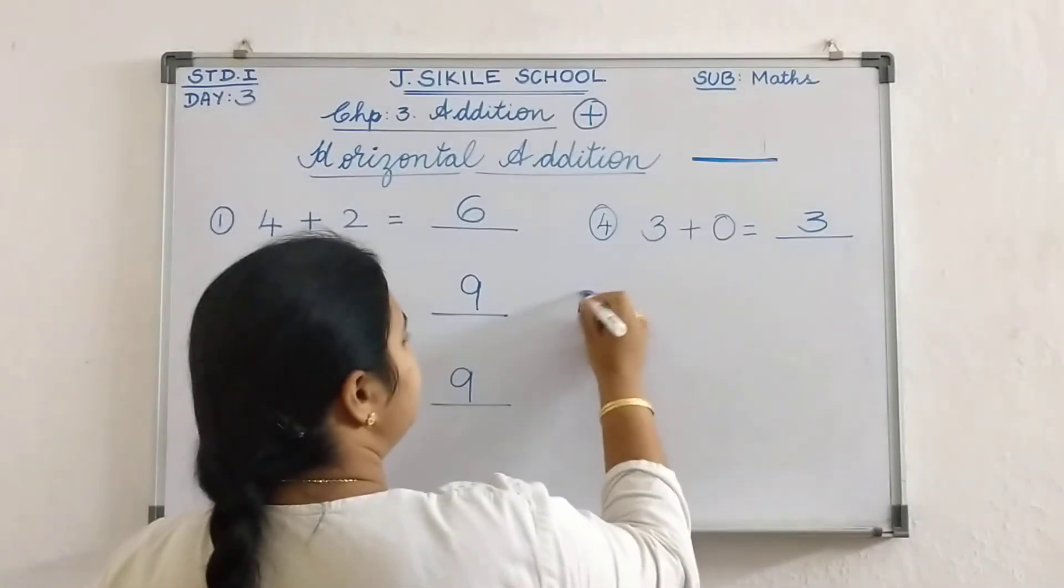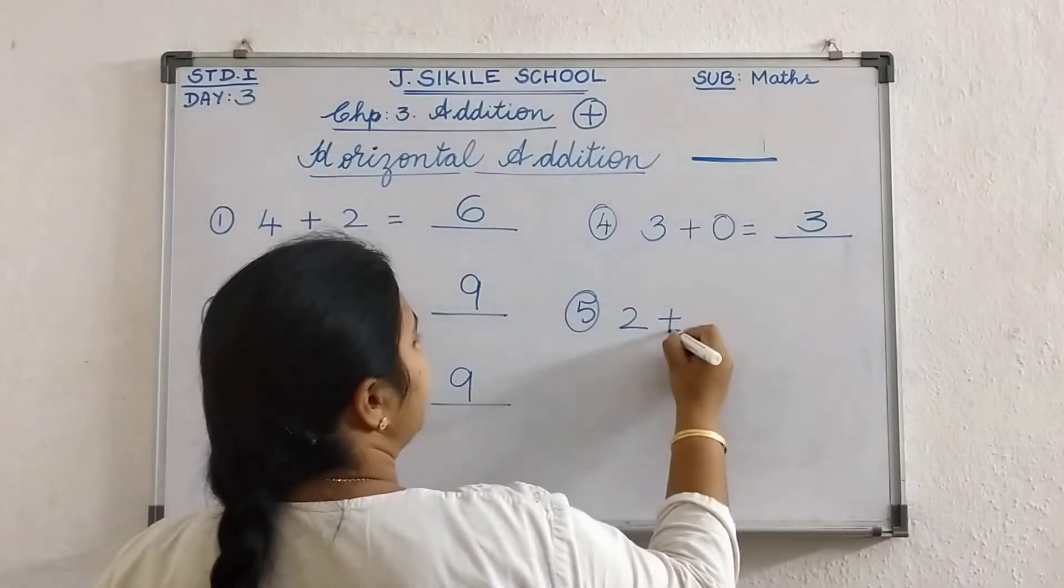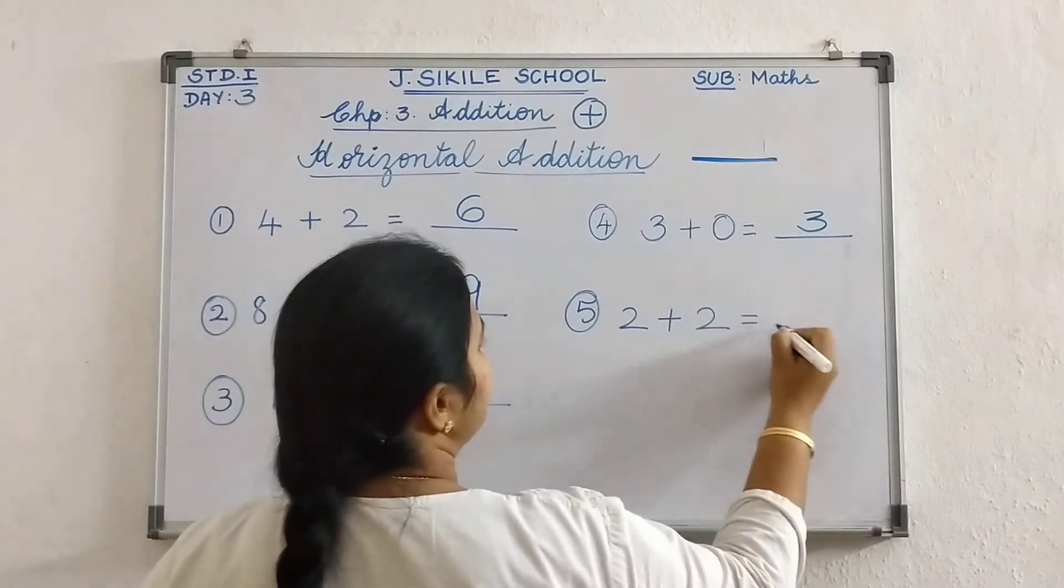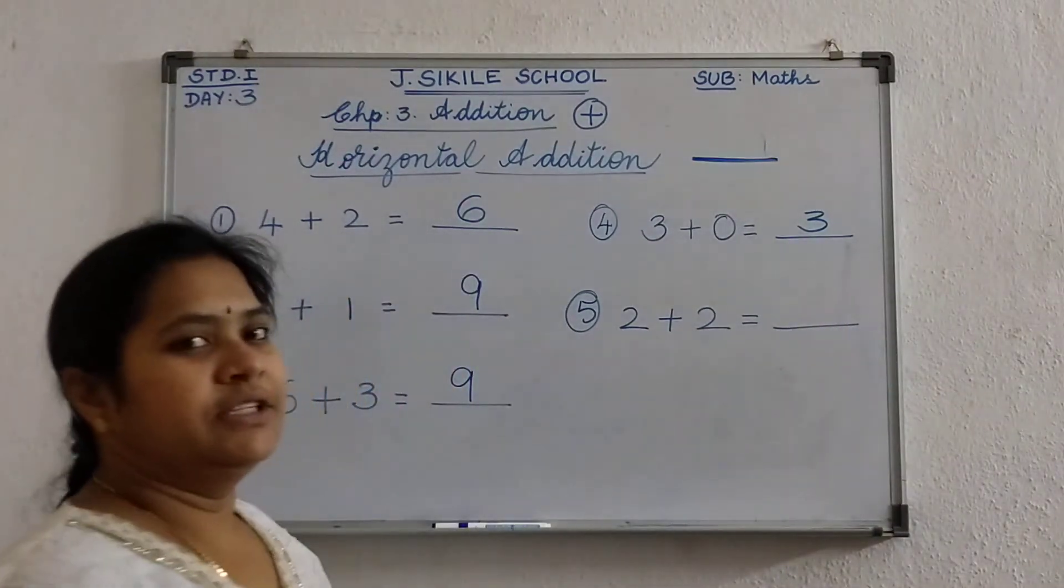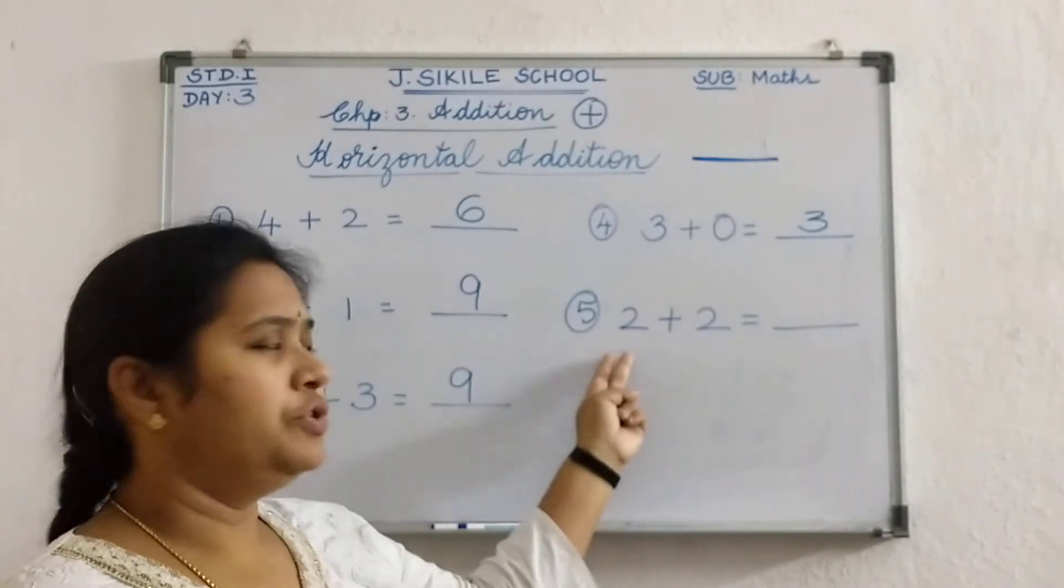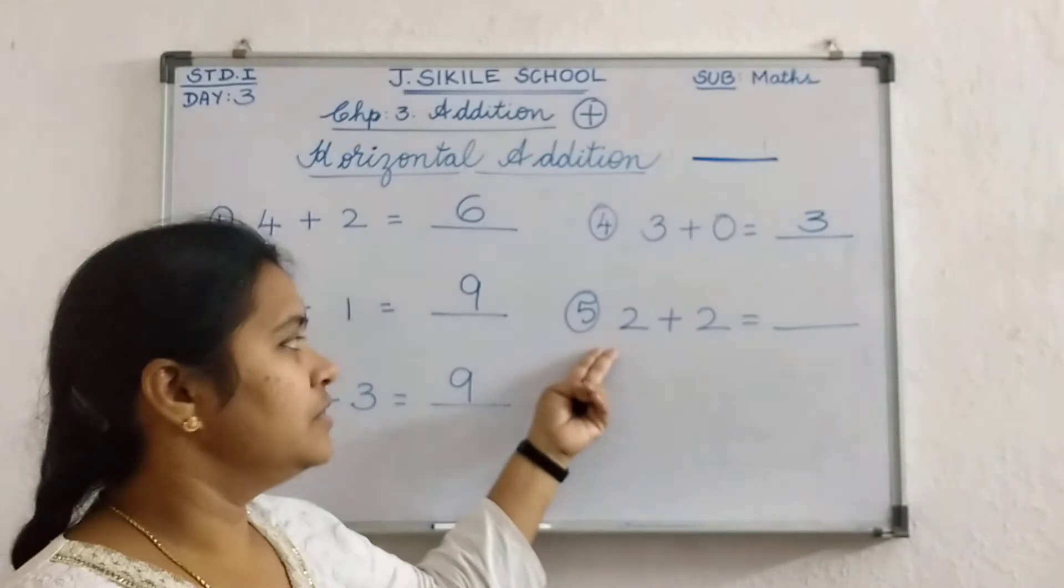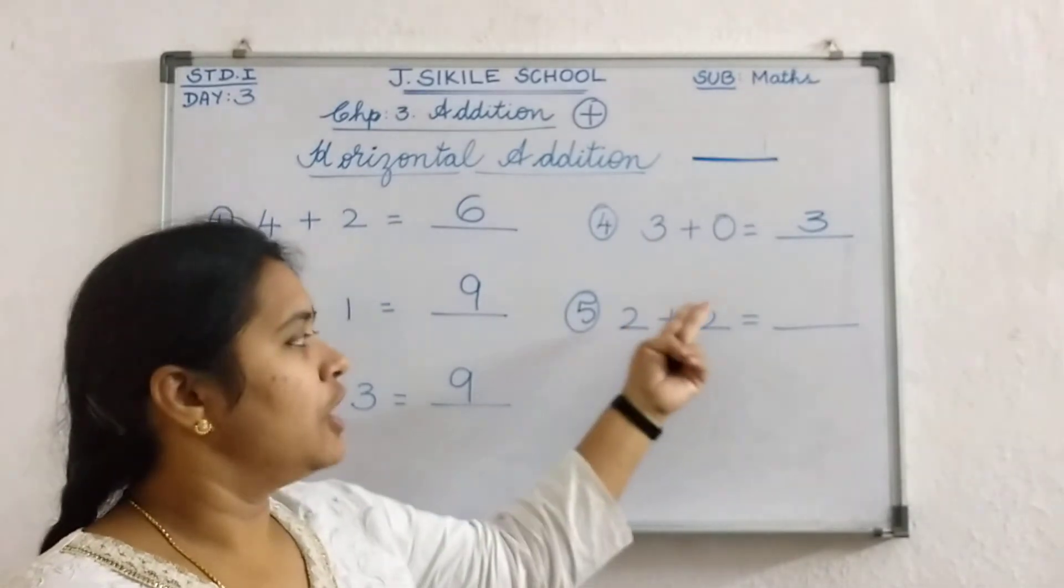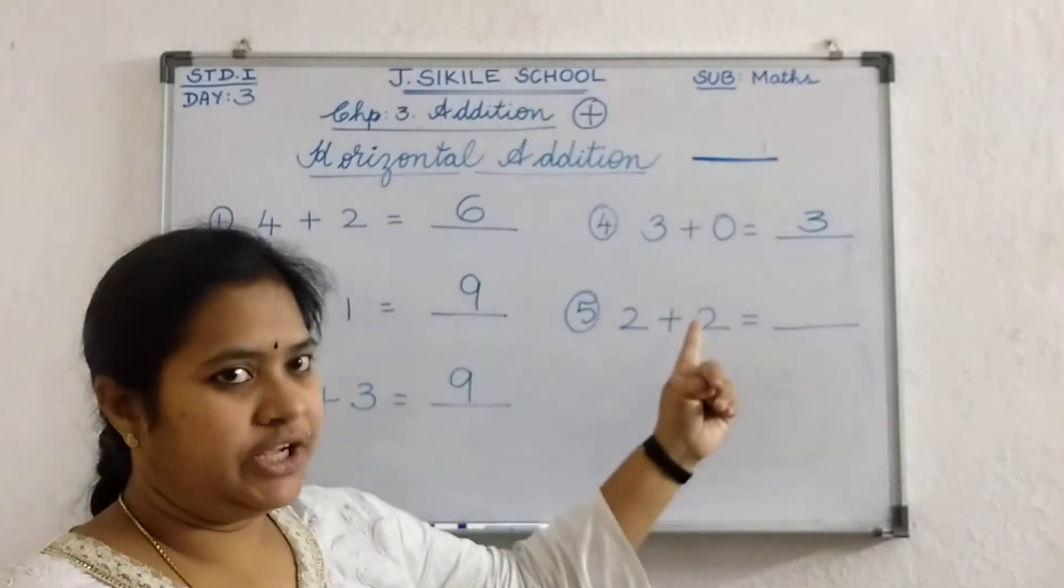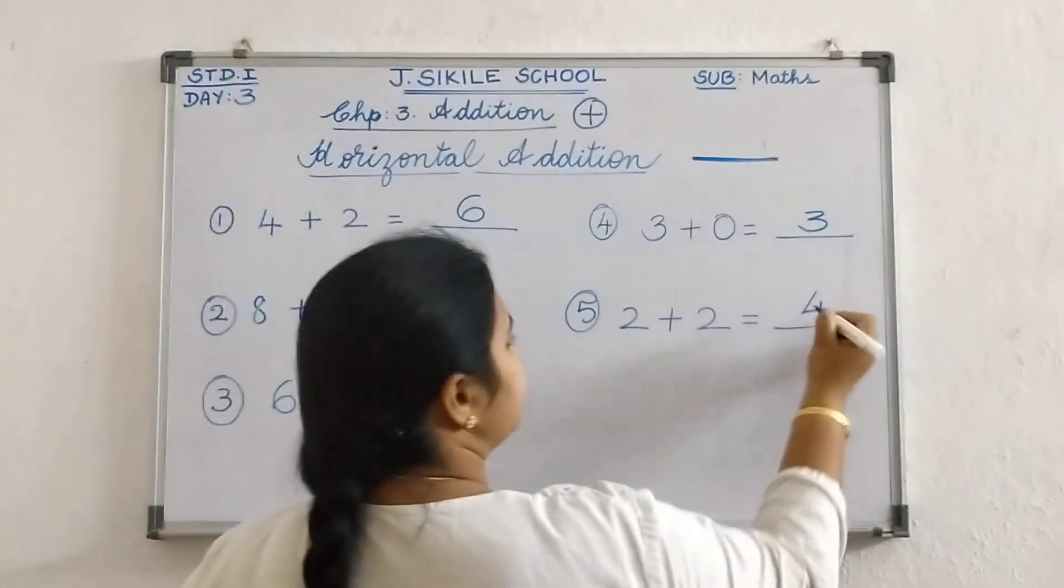Say me another question. Okay. 2 plus 2 is equal to dash. Same numbers. Take 2 fingers. Here same numbers. So you can open the first number fingers or the second number fingers. Anything. So take 2 fingers. Count 2 after. 3, 4. Write 4 in the answer box.